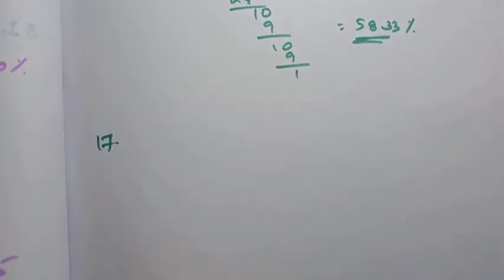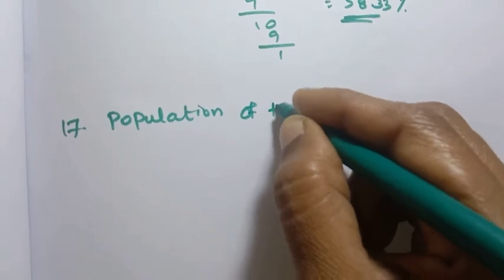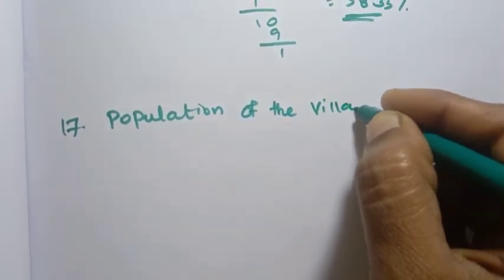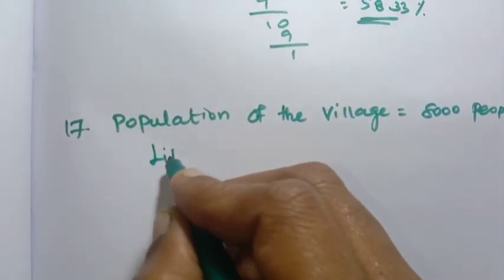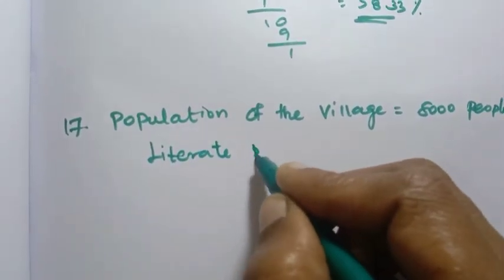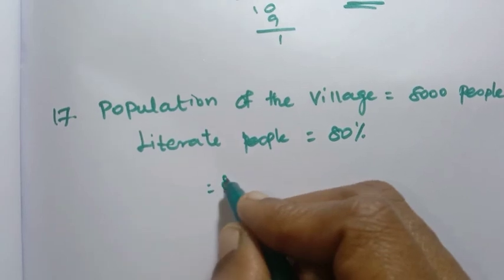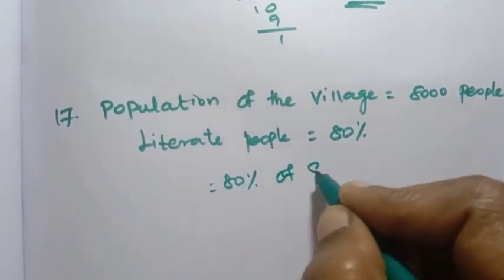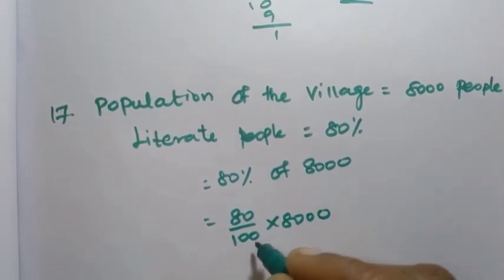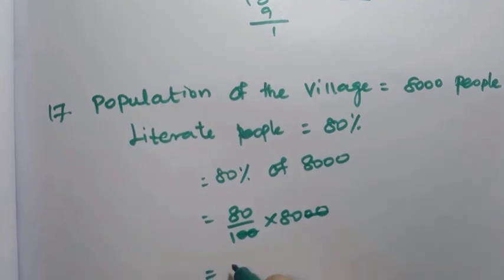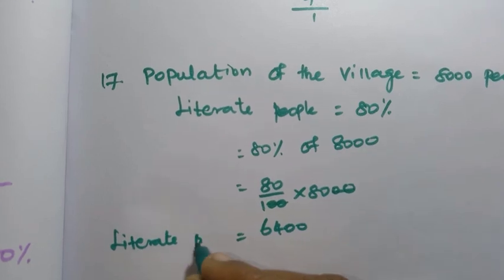Population of the village is 8,000 people. Literate people: 80 percent of 8,000 = 80 by 100 into 8,000. Two zeros cancel, so 8 eights are 64, giving 6,400 literate people.